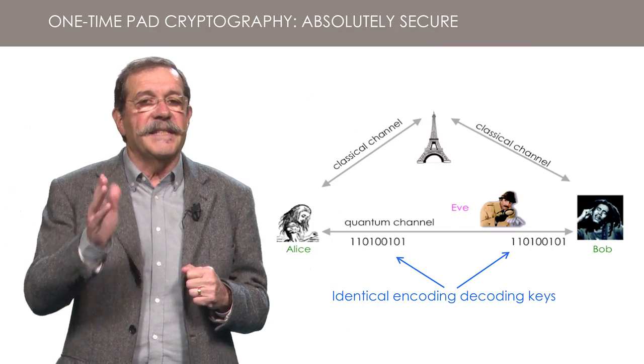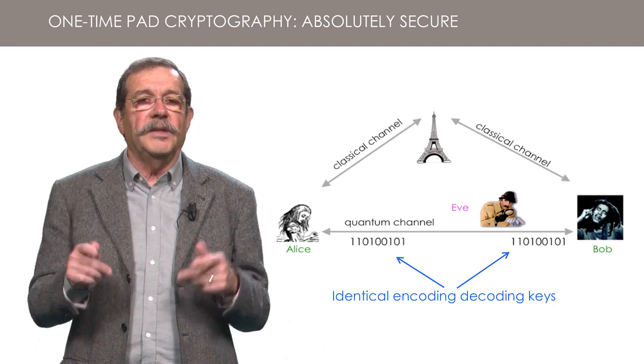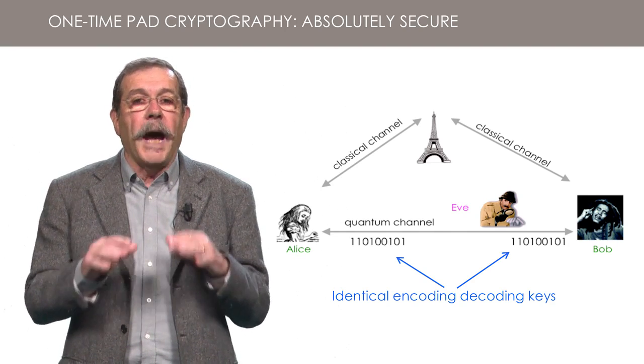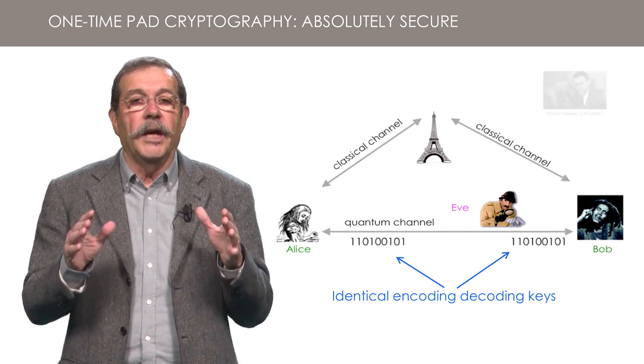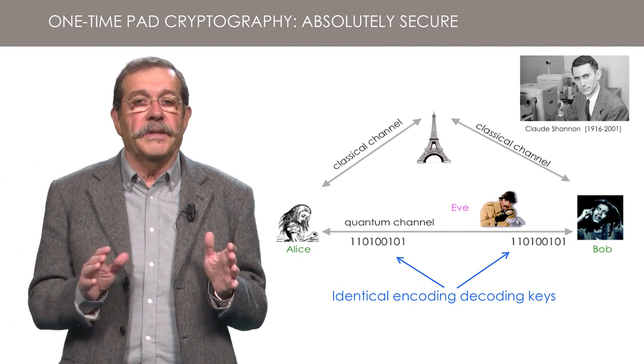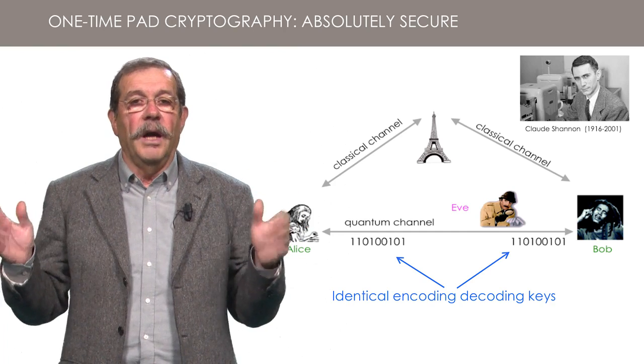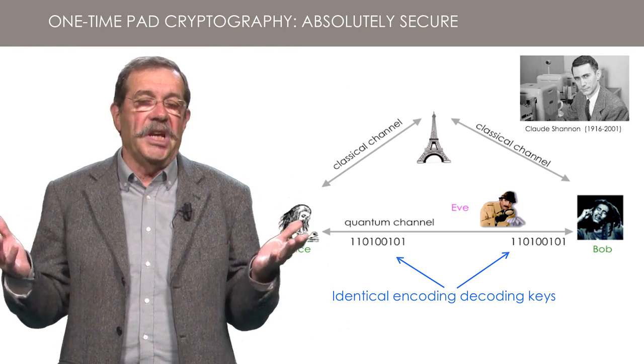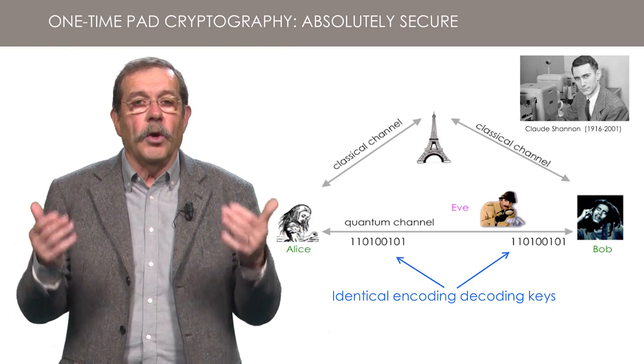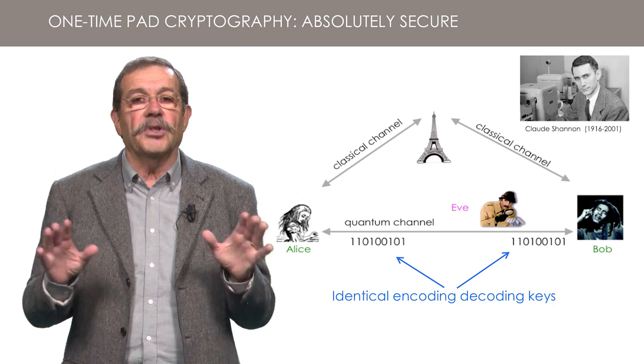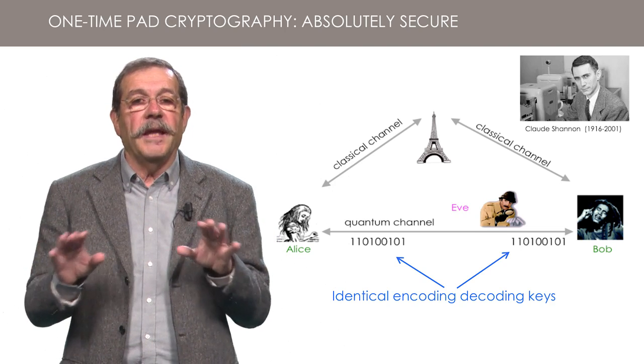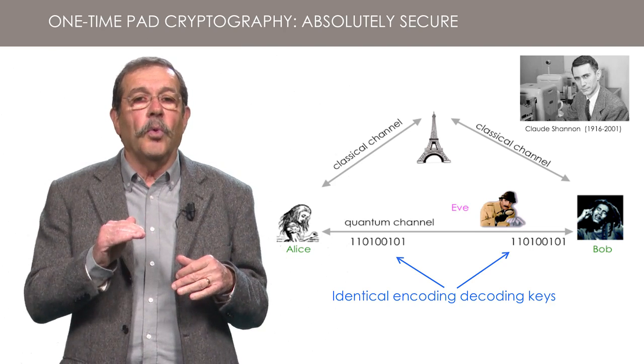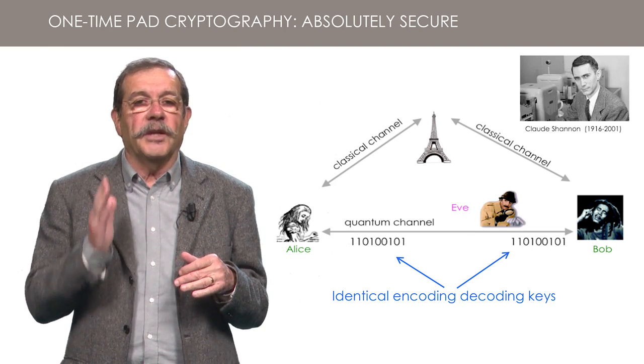In lesson 7 of Quantum Optics 1, I presented the one-time pad cryptography method proved to be absolutely secure by Claude Shannon. Two partners, Alice and Bob, have two identical random series of numbers, say 0 and 1, used to encode and decipher a secret message, which can then be transmitted on a public channel.